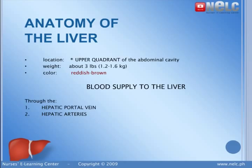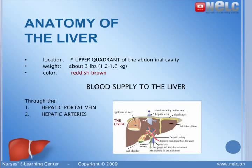The liver is the largest gland in the body. It's located in the upper right quadrant of the abdominal cavity, below the diaphragm, to the right of the stomach. Blood supply flows through two different places to get to the liver: the hepatic portal vein, which carries venous blood from the digestive tract to the spleen and the liver, and the hepatic arteries, which carries oxygenated arterial blood to the liver.